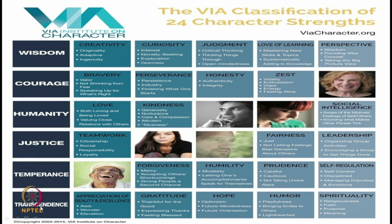So they identified 6 virtues and under these 6 virtues, 24 character strengths, and they defined all of them. They also developed a psychological test. The initial scale had limited psychometric properties, but later scholars worked on it and it is now well-established. Let us briefly revise the key words: the 6 virtues are wisdom, courage, humanity, justice, temperance, and transcendence. Under wisdom, creativity is characterized by originality, adaptiveness, and ingenuity.